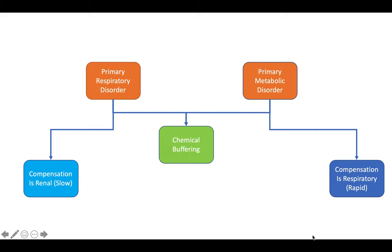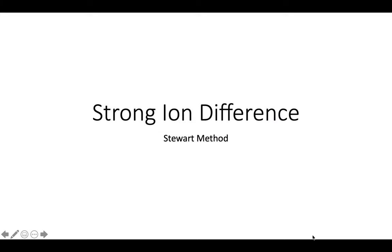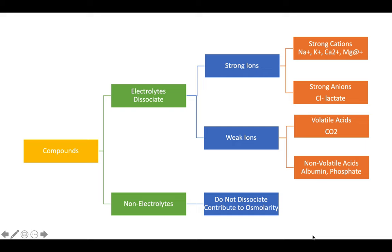If you are alkalotic, the respiratory rate will go down and you will start retaining CO2, forming hydrogen ions and bicarbonate ions. Hydrogen ions will try to balance out the alkalosis. One method of describing acid-base balance uses the Stewart method, which is about strong ion difference.